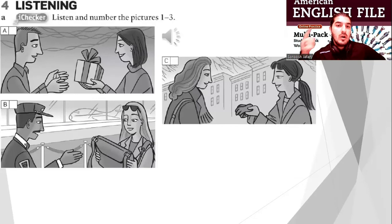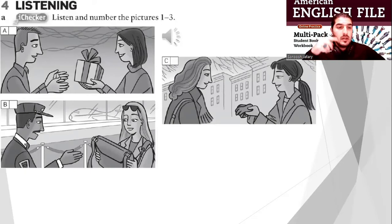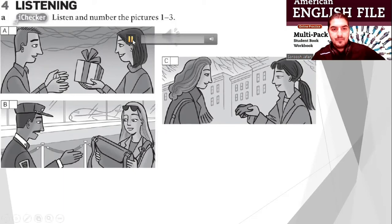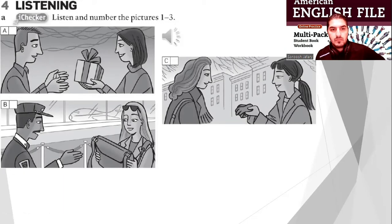Now listen and number the pictures: one, two, three. Dialogue one: 'Look, they're great.' 'Yes, they are, but what are they?' 'They're gloves.' 'Oh, okay, yes, they are great.'